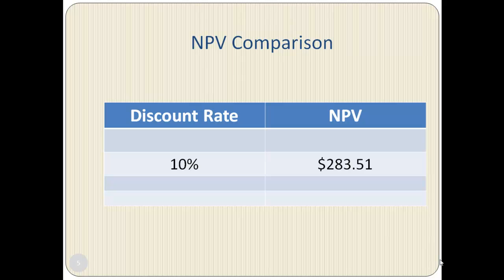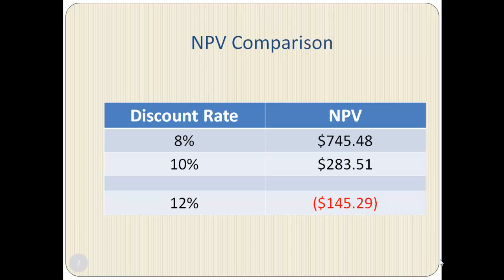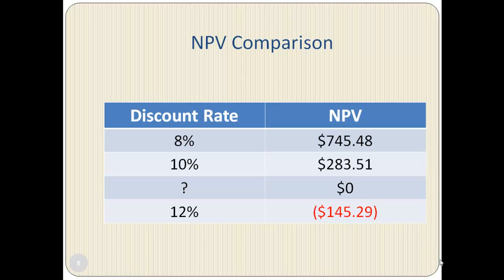Now we are going to create a table to compare NPV at different discount rates. At 8%, the NPV of these cash flows comes out to $745.48. At 12%, the NPV comes out to be negative $145.29. The numbers in the table suggest that as the discount rate rises, the NPV drops.